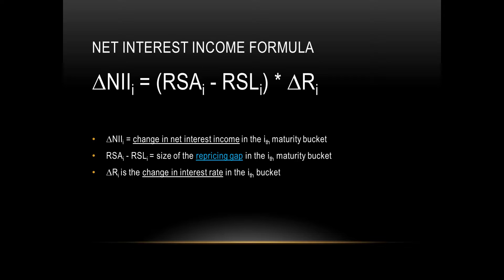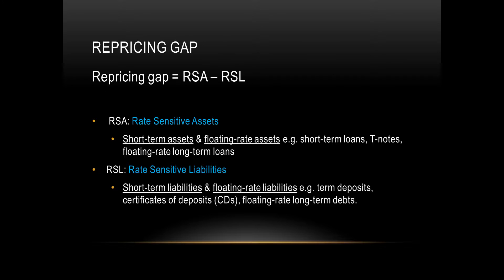Before we dive deeper into this formula, I just want to cover the repricing gap in a bit more detail. The repricing gap is RSA minus RSL — but what is RSA and what is RSL? RSA is your rate-sensitive assets: basically any assets that will have a relatively big impact on the bank's income if there are changes in interest rates. They are the bank's short-term assets and floating rate assets — for example, short-term loans, T-notes, floating rate long-term notes, etc. Similarly, RSL are rate-sensitive liabilities: the bank's short-term liabilities and floating rate liabilities.